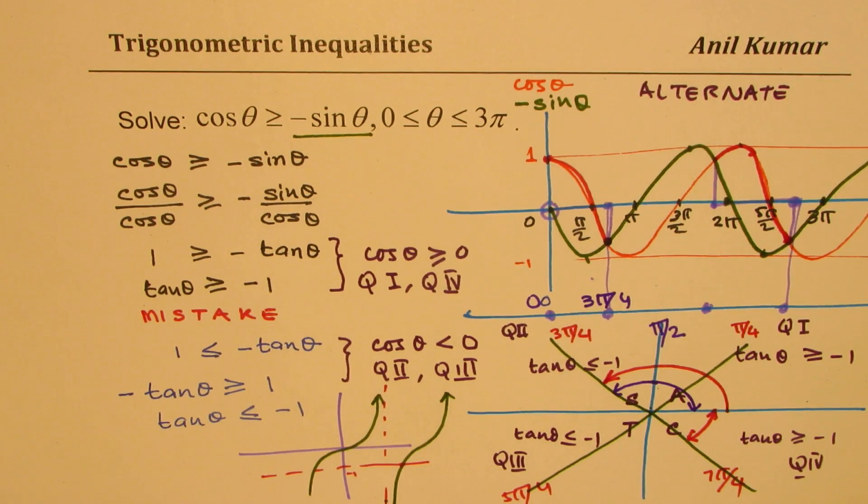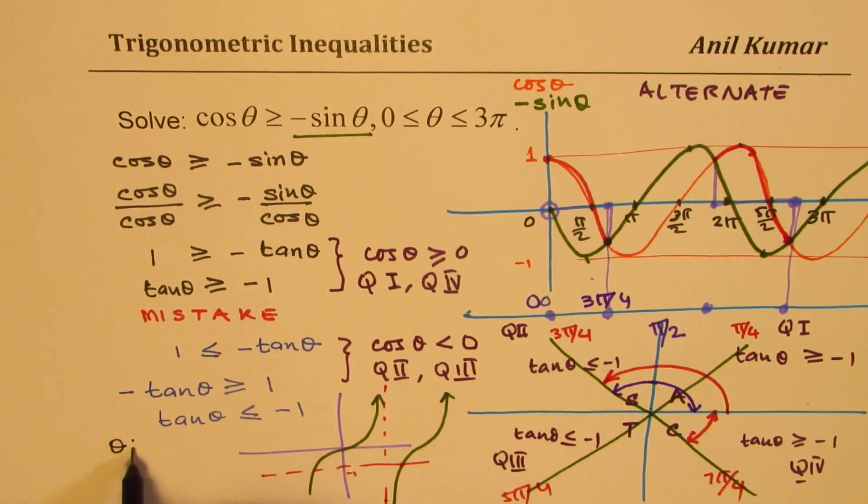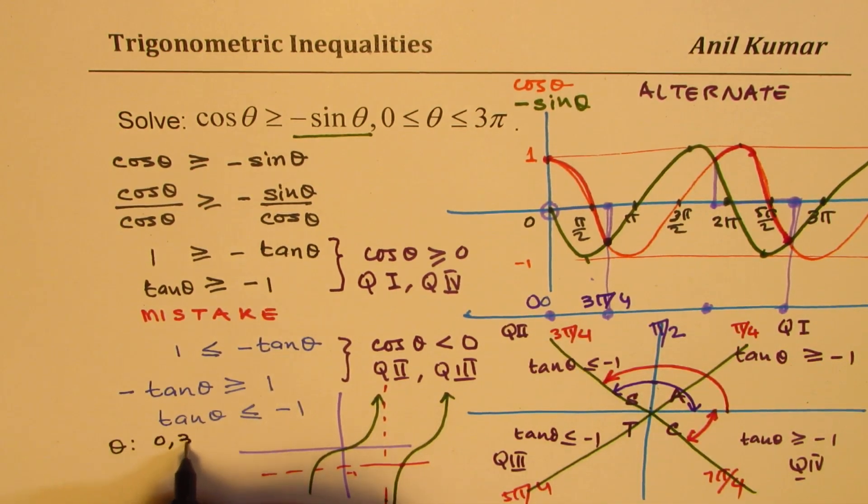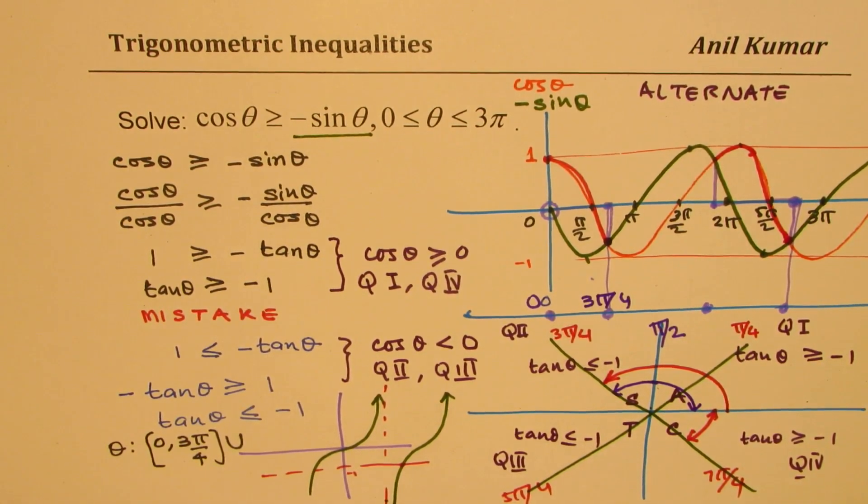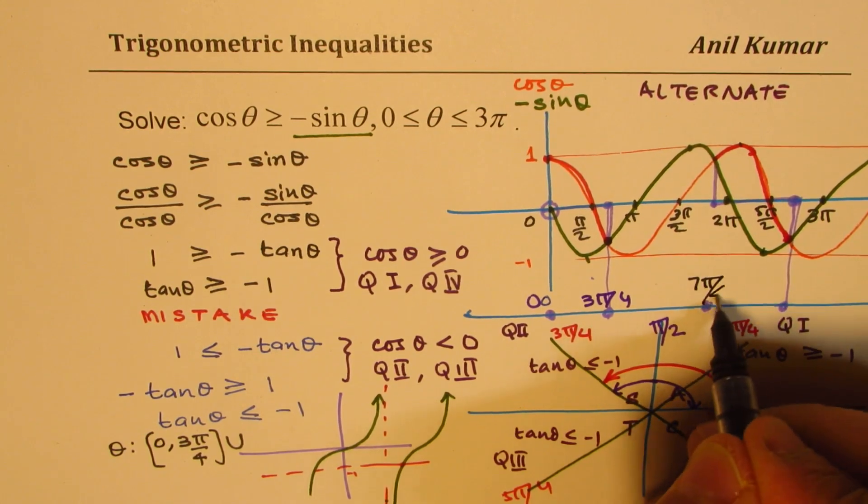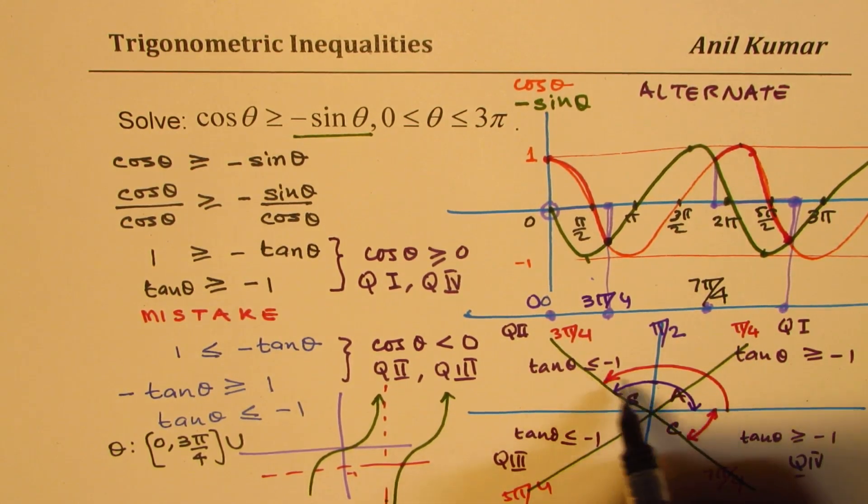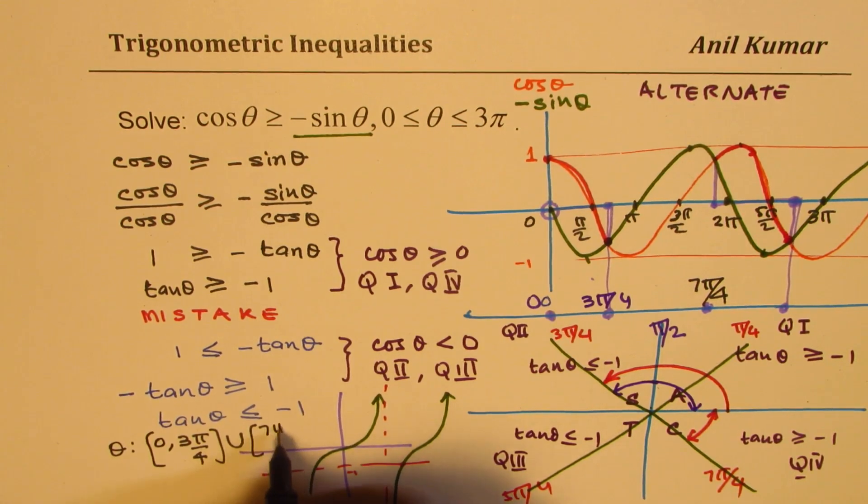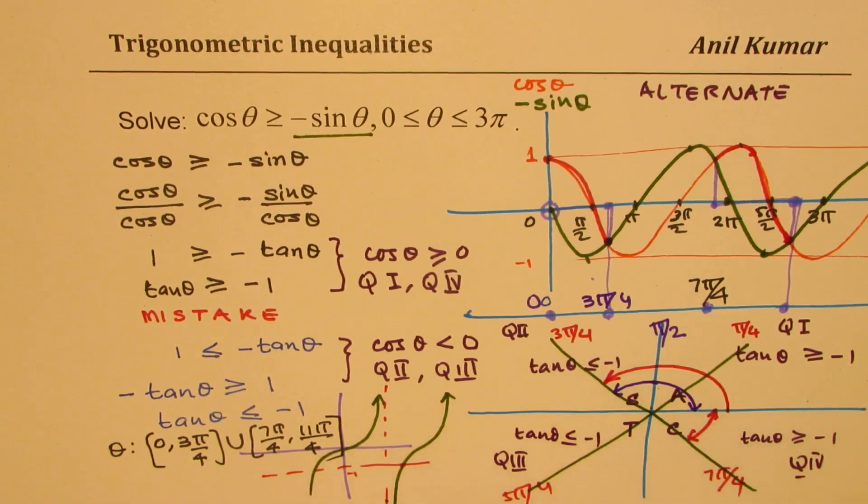Now I could write down our answer from these two inequalities. θ is between 0, that portion is 3π/4. And then from 7π/4, 7π/4, we can add π to this. So 7 plus 4 is 11. So it is from 7π/4 to 11π/4. So 180 degrees. That is how we are going to get the solution for the given question.